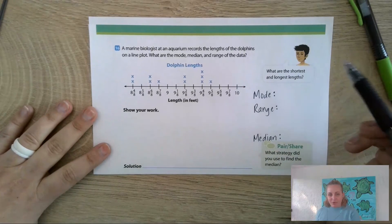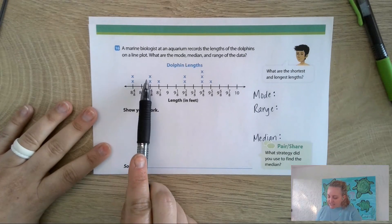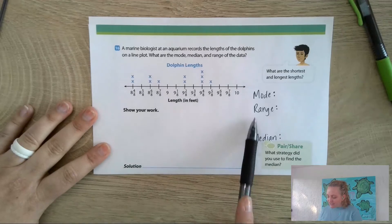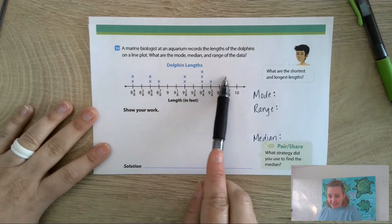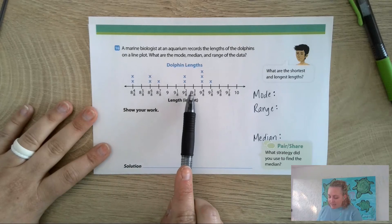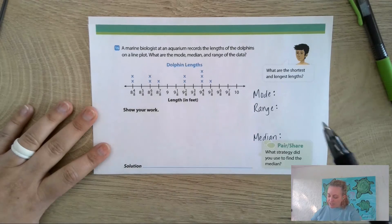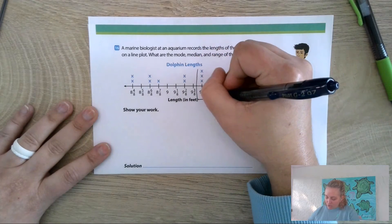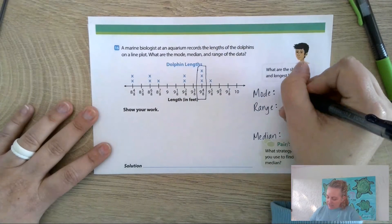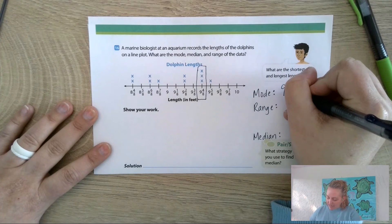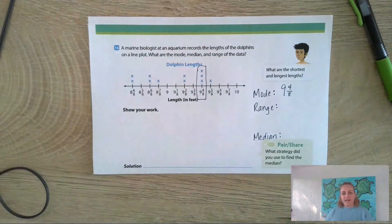Mode is the most, so I'm looking at my X's. Remember, we're looking at the data, which is the X's. I look at this and I see that there's two, two, one, two, three, one. Well, three is the most, so the mode is 9 and 4/8. That's the mode.